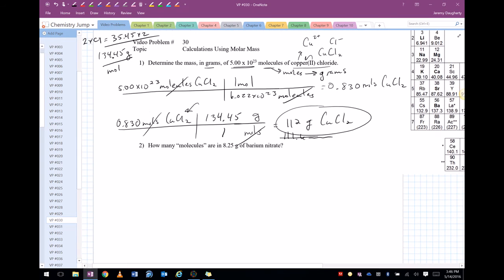And then this question down here, how many molecules, and I put molecules in parentheses because really we'd be talking about formula units because it's an ionic compound. How many molecules are in 8.25 grams of barium nitrate? So let's get the formula for barium nitrate first. There's barium, there's nitrate, so the formula's going to be Ba(NO3)2.